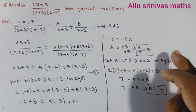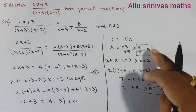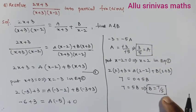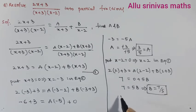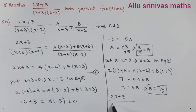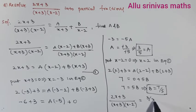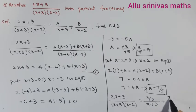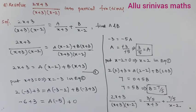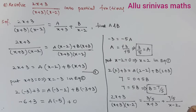We get the required value of B. Both values have been determined. So A is replaced by 3/5 and B is replaced by 7/5. Therefore (2x + 3) / [(x + 3)(x − 2)] = (3/5)/(x + 3) + (7/5)/(x − 2). In this way we can find out the partial fraction for the given rational fraction. Thank you.